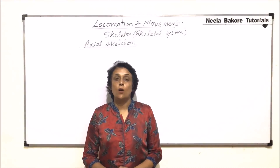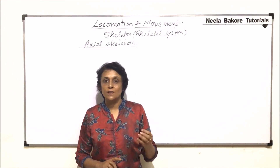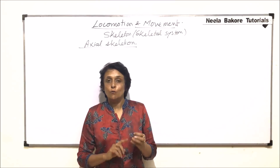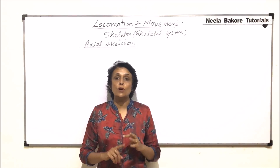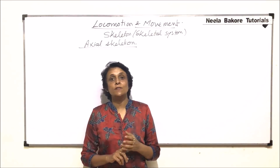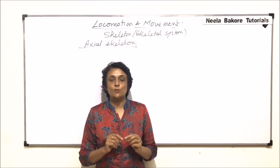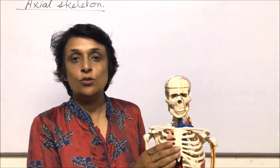Up till now we have seen all the bones in the axial skeleton — cranial and facial bones, the vertebral column, sternum, and ribcage. Now we will see the same bones using the model so that we understand the attachment and exact location of all these bones. This is the model of the human skeleton, and using this we'll go over all the bones of the axial skeleton.